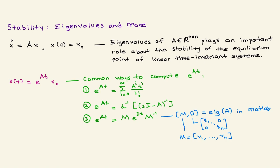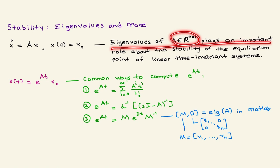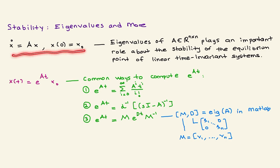To begin with, let's look at this linear time-invariant system. What we are going to discover is that eigenvalues of this matrix A play an important role about the stability of the equilibrium point of this dynamical system — in this case, equilibrium point X equals zero.